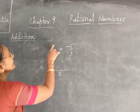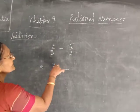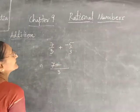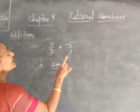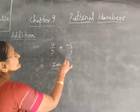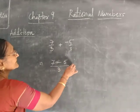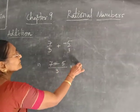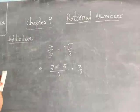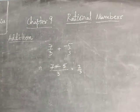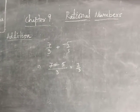1 will come. 1 into 7 is 7. Then plus or minus will come. 3 divided by 3 is equal to 1. 1 into minus 5 is equal to minus 5. Then it will come over 3. So this way you have to add the rational numbers.